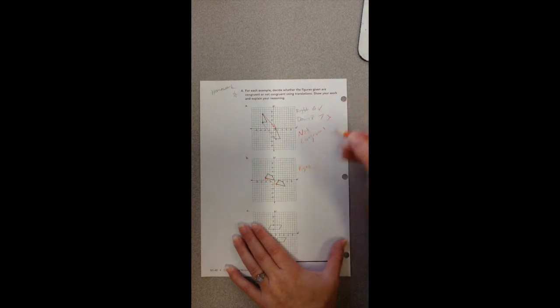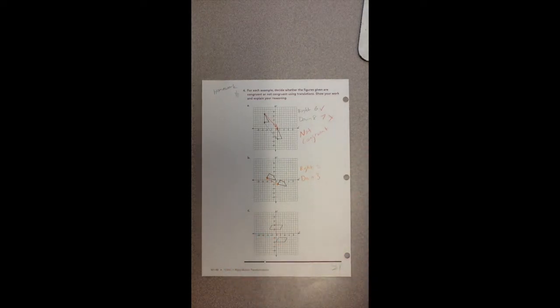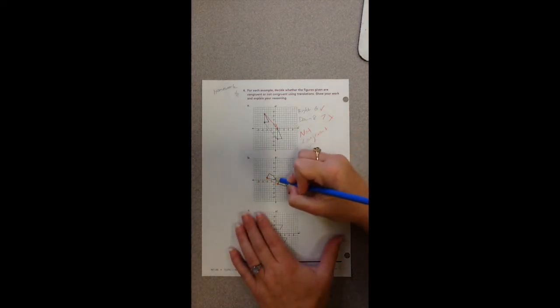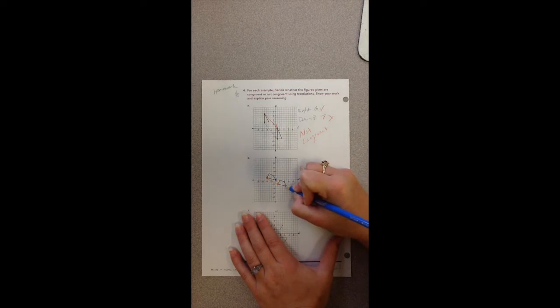So now if that holds true for the other points, then this is a congruent figure. So now let's do maybe this point to this point.